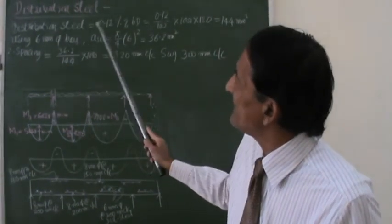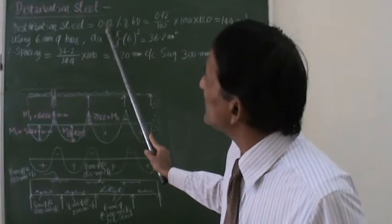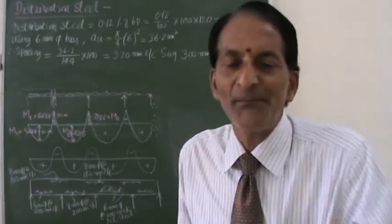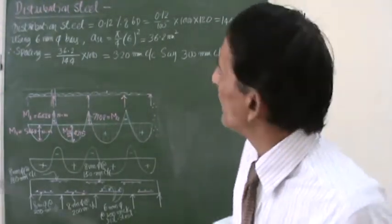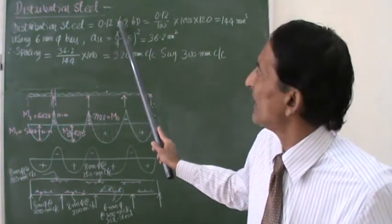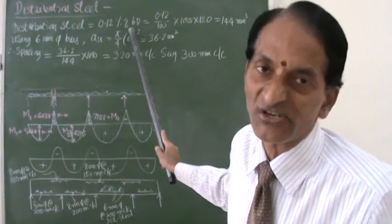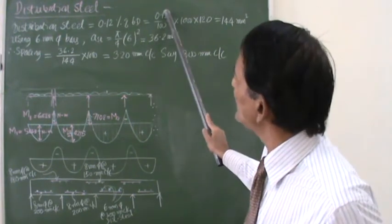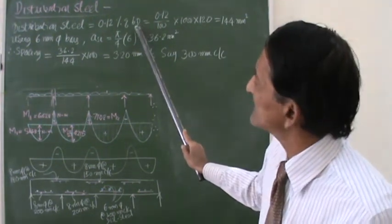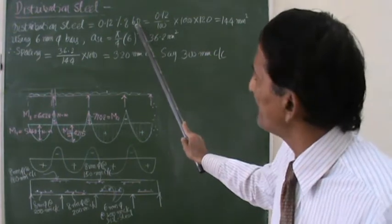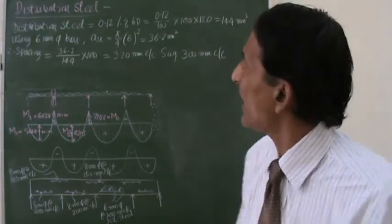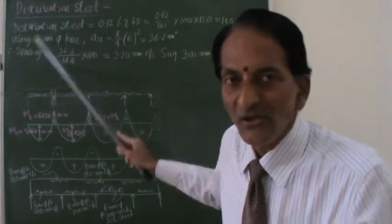Distribution scheme as you know, it can be calculated as 0.12% of B. Since it is a HYSD bar we have used, FE 415 steel. It should be at a rate of 0.12% of your gross cross sectional area, B into D. So 0.12 divided by 100, B is 1000, and gross depth or overall depth is 0.14. So I need 140 square mm area of steel for this distribution scheme.